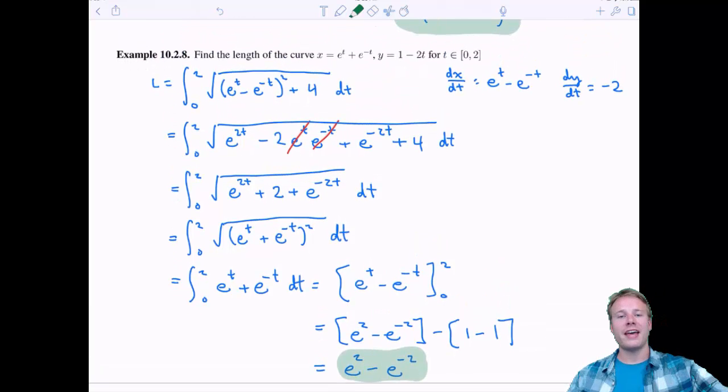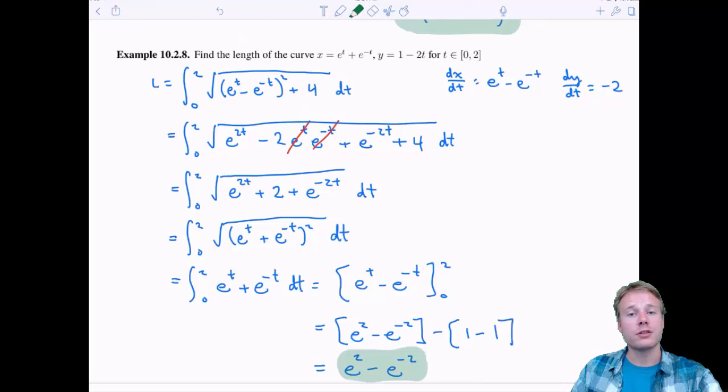And that is our last example for 10.2 arc length. And that's it for parametric equations. So go ahead and do your homework. And when you come back next time, we'll be talking about polar coordinates. I'll see you shortly.